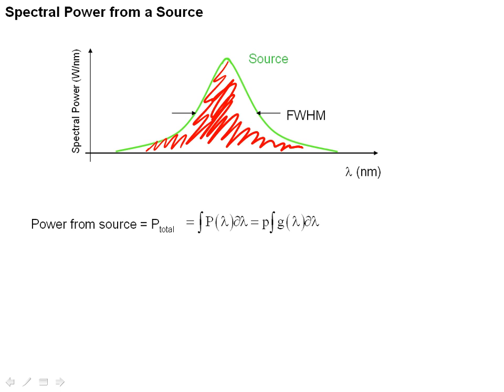This is essentially exactly the same thing, except you're making the simplification that the line shape g of lambda has an area equal to 1. If you do this, you find that this constant little p is just the total amount of power. This line-shape function is used in many different fields of science and engineering.